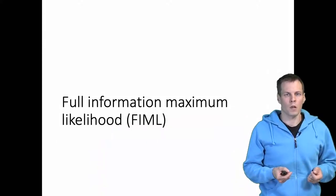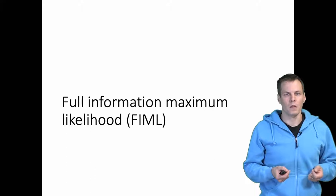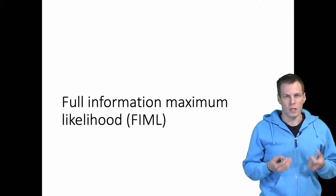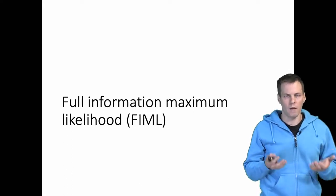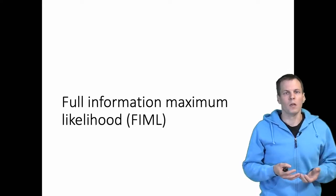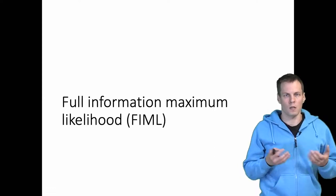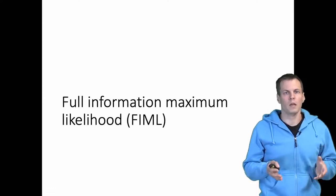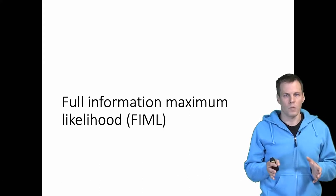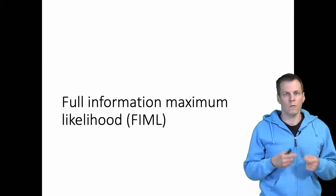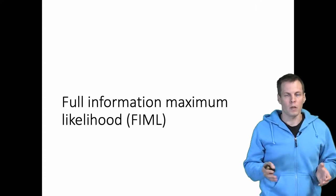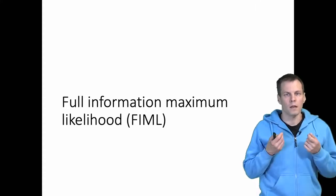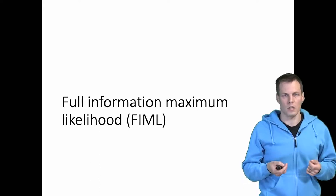Full Information Maximum Likelihood Estimation, or FIML, is a common modern technique for dealing with missing data. It is available in pretty much every modern SEM software and produces consistent and asymptotically unbiased estimates under missing at random. As long as the cause of missingness is observed, this technique will deal with the problem. If your data are missing not at random, the estimates might be inconsistent and biased.